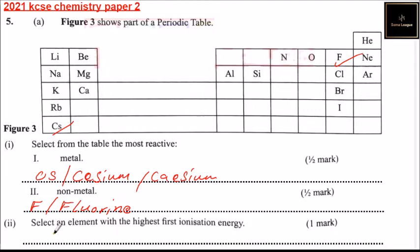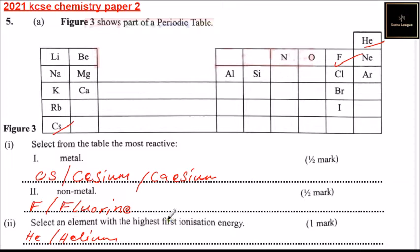Roman numeral 2: select an element with the highest first ionization energy. The element is helium. Helium has the highest ionization energy — it is in Group 8 and is the most stable, meaning it is the hardest element to lose an electron from.